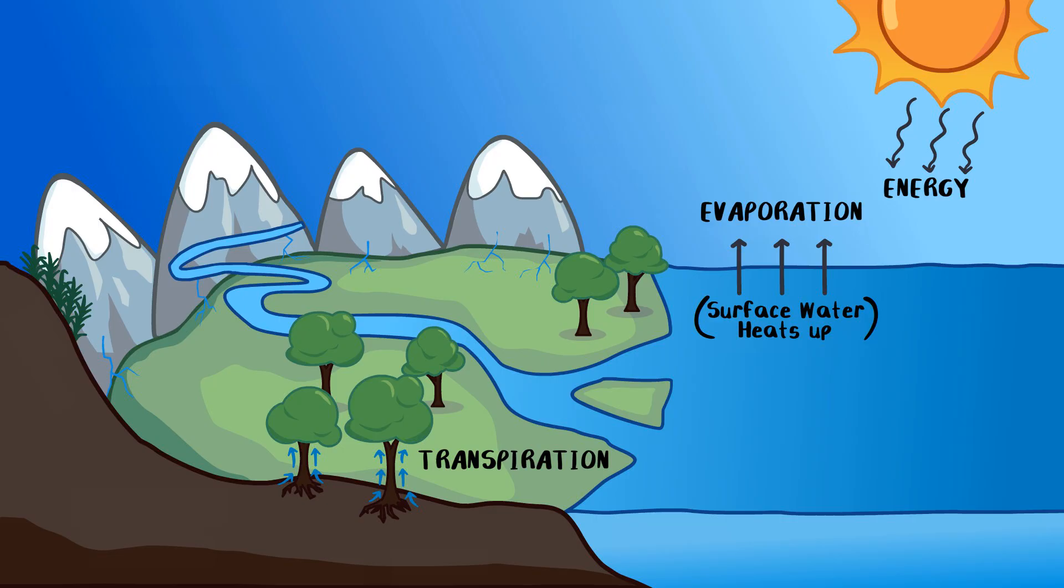As water vapor rises into the atmosphere, the temperature drops. This cooling causes the vapor to condense into tiny water droplets, forming clouds, fog, or dew. This process is called condensation.